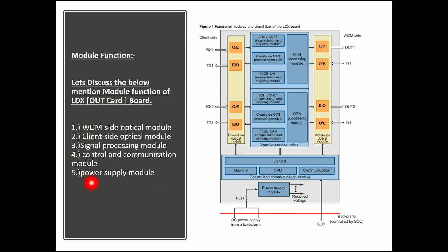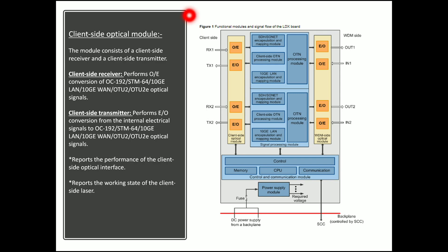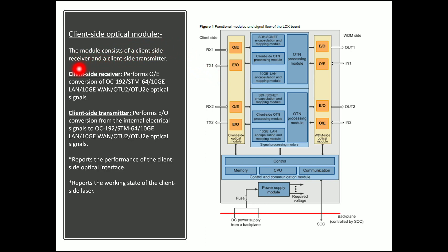Let us discuss the client side optical module. In the LDX card, there are two inputs: RX1 is the receiver and TX1 is the transmitter. RX1 receives the client services and TX1 delivers the optical services back to the client. The client side receiver performs optical-to-electrical conversion of OC-192, STM-64, 10G LAN, 10G WAN, and OTU2 optical signals.